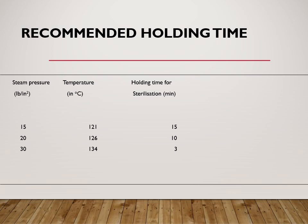Holding time is the time that starts once the required temperature and pressure for sterilization have been achieved. The most commonly used condition is 121 degrees Celsius at 15 psi steam pressure, maintained for 15 minutes. If temperature is raised to 126 degrees Celsius, the holding time is reduced; at 134 degrees Celsius, only 3 minutes is needed. However, 121°C at 15 psi for 15 minutes is the most commonly used standard.